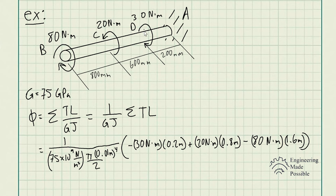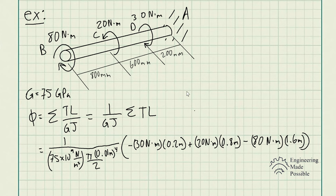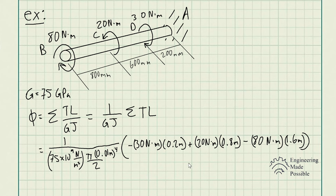Starting from point D: since the torque is clockwise, the sign convention is negative — so negative 30 N·m times 0.2 meters, which is the length from the fixed point A to D. At C, the torque is counterclockwise, which is positive, so 20 N·m times 0.8 meters (600 plus 200 millimeters). Remember, the length is measured from the fixed point to where the torque is applied. At point B, 80 N·m is applied clockwise, which is negative, times 1.6 meters — the total length from the fixed point to B.